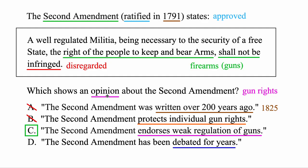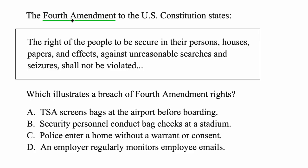I have a video on opinions and bias if you want more practice with those. Now let's move to the Fourth Amendment. The question is: which illustrates a breach — a violation — of Fourth Amendment rights? The amendment states: the right of the people to be secure in their persons, houses, papers, and effects against unreasonable searches and seizures shall not be violated. The key phrase is the right of the people against unreasonable searches. A seizure is when police take something away from you. So which answer sounds like an unreasonable search?